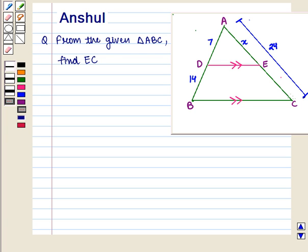Hello and welcome to the session. In this session, we are going to discuss the following question: From the given triangle ABC, find EC.